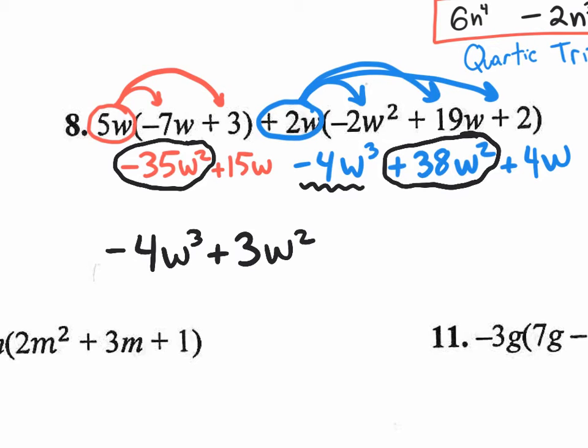Again, exponents do not change when you're adding or subtracting. Exponents only change when you're multiplying. Okay, after the w squared, we move on to w's. Is there any w's? Yes, there is. There's this 15w and this 4w. If I combine those, what do I get? 19 of those w's. And there is no number that's all by itself without a variable. There is no constant. So this would be your answer.